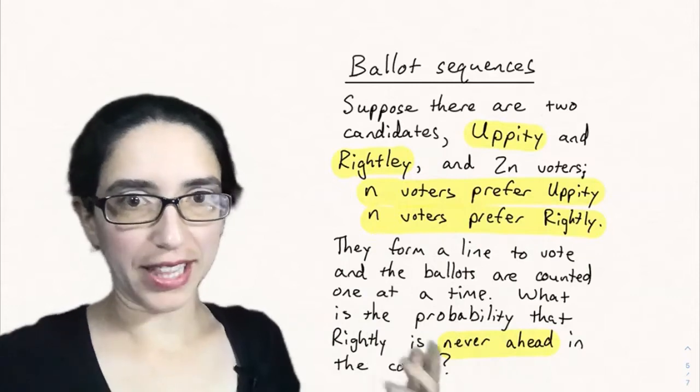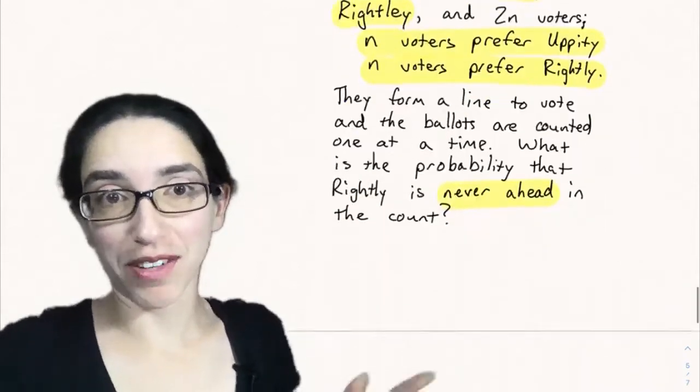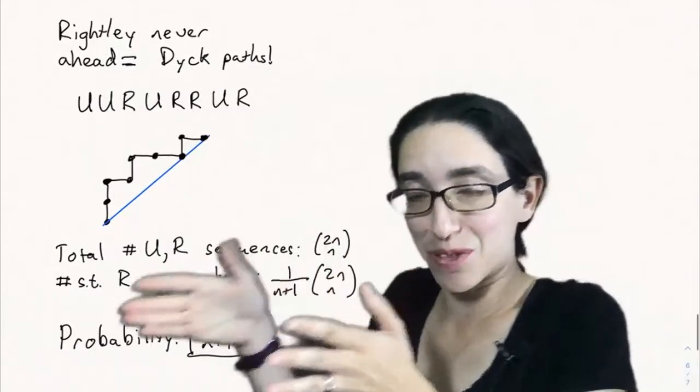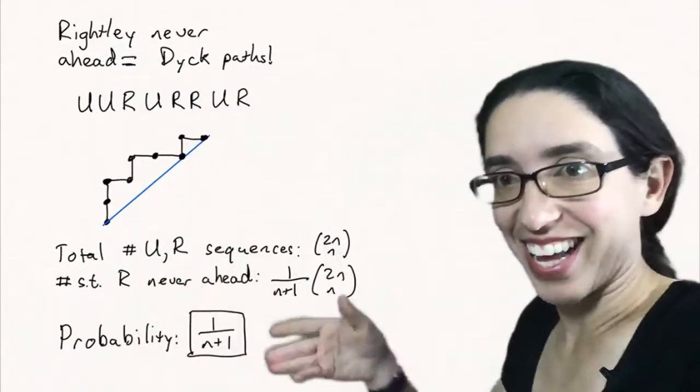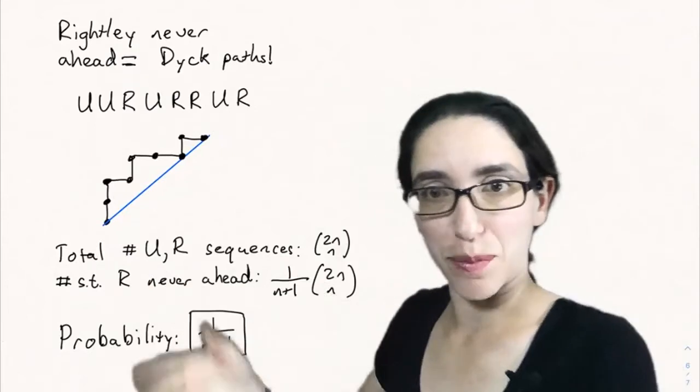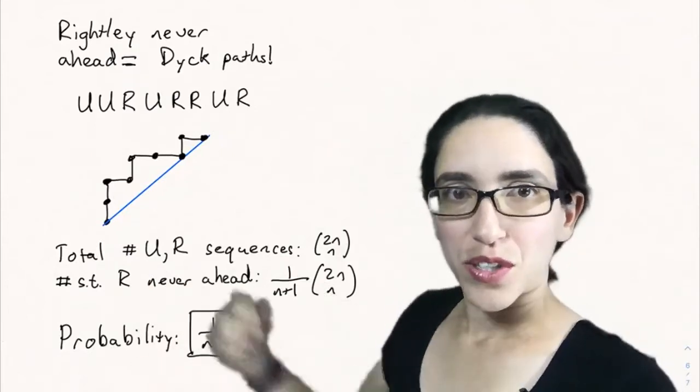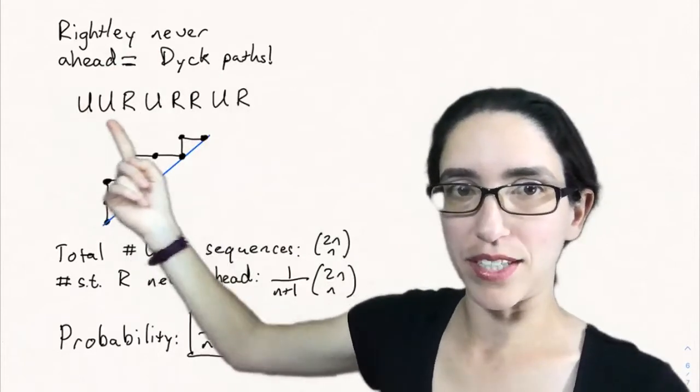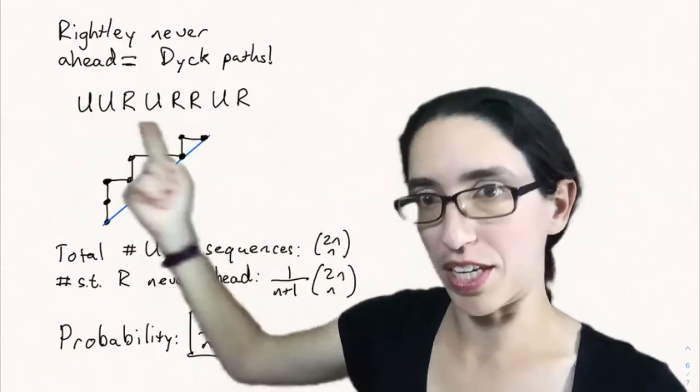What's the probability that rightly is never ahead in the count, even though they end up tied? What's the chance that rightly is never looking like he's ahead as they add up the tallies? It turns out that rightly never being ahead corresponds to the sequence of U's and R's corresponding to a Dyck path.